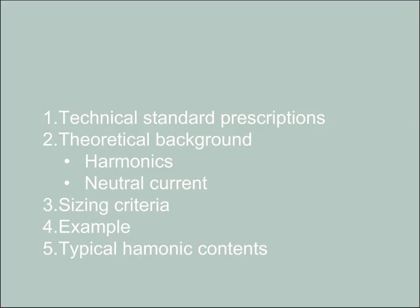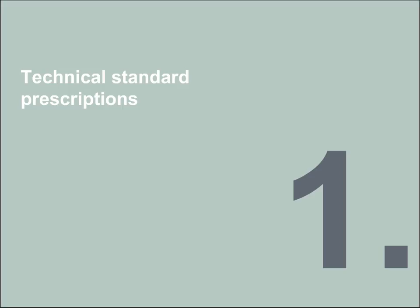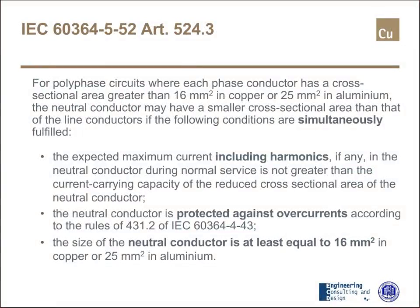Let's start from the technical standard prescription on Neutral Sizing. The reference is the IEC 60364, and specifically Part 5, Article 524.3. This prescription is fully reproduced in the slide now, and I would suggest to read it together. For polyphase circuits where each phase conductor has a cross-sectional area greater than 16 mm² in copper or 25 mm² in aluminum, that is a condition, in this condition...